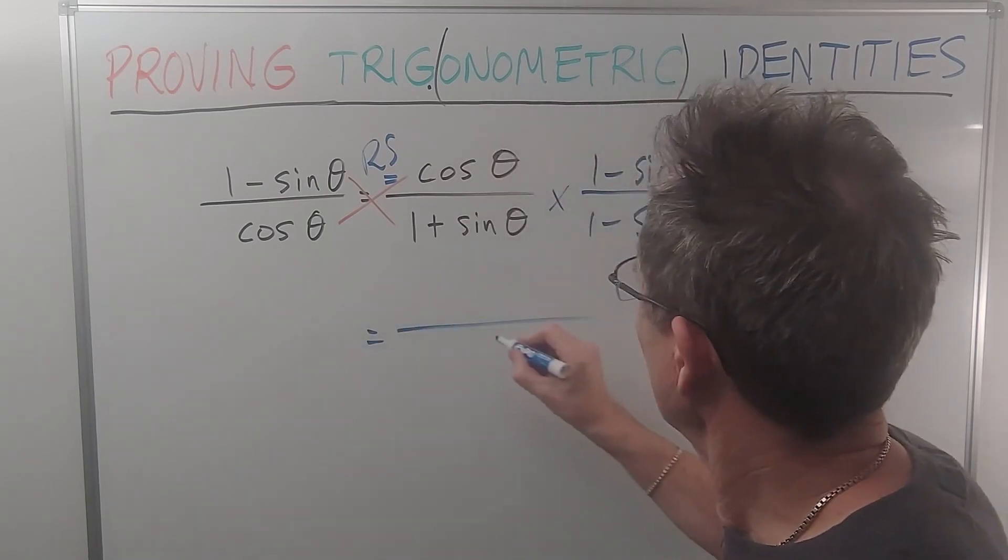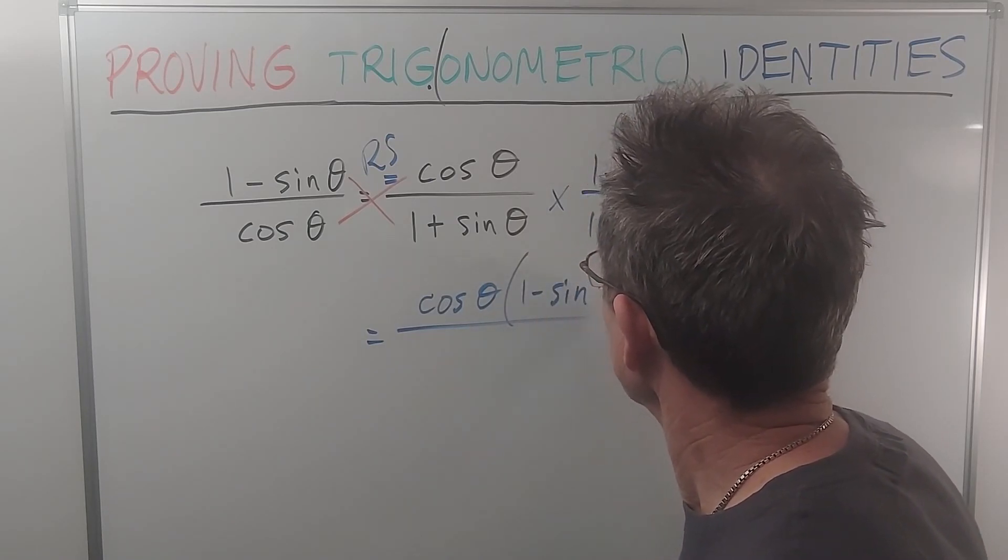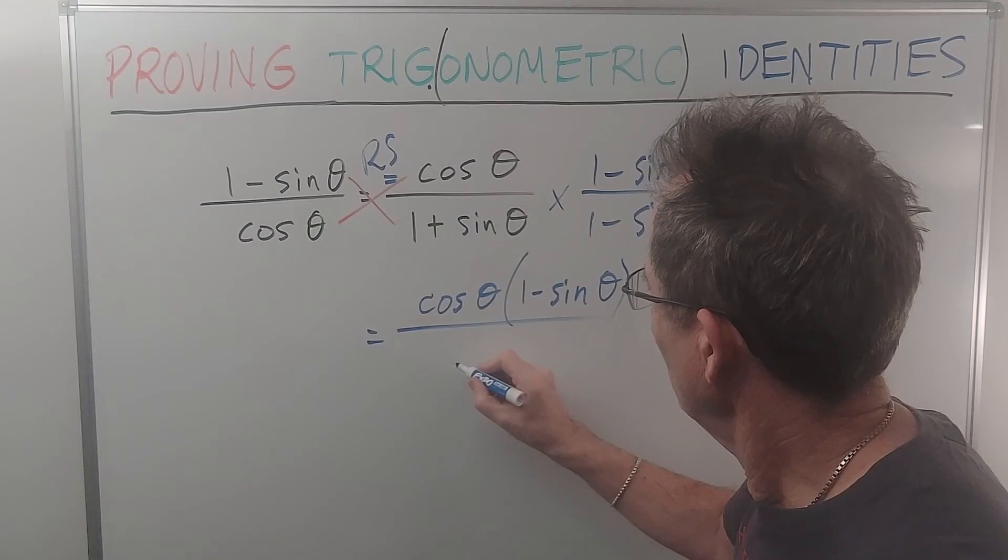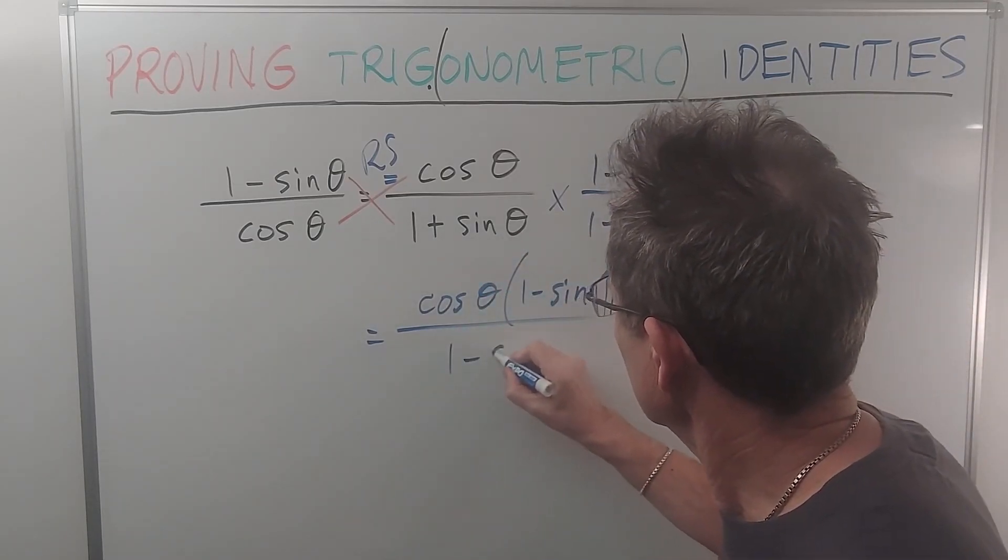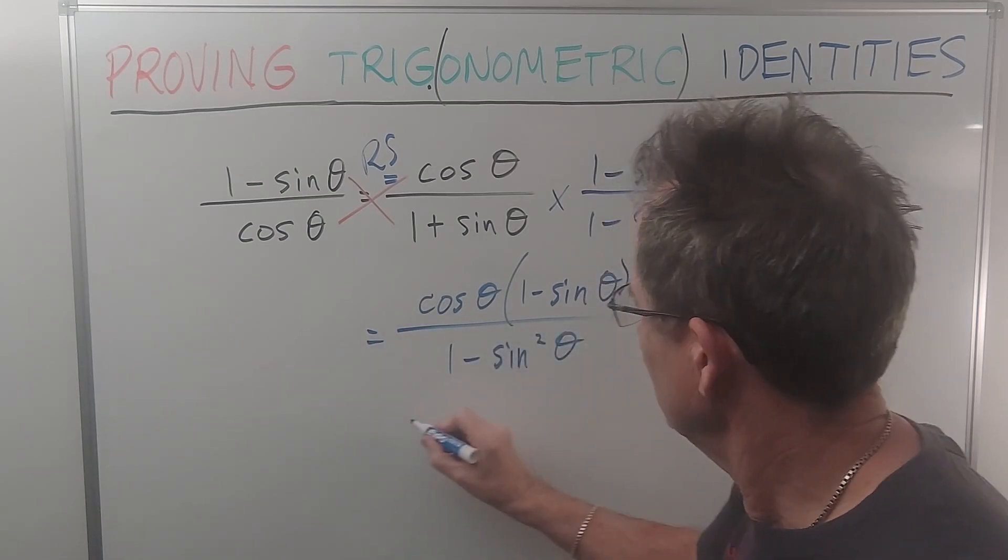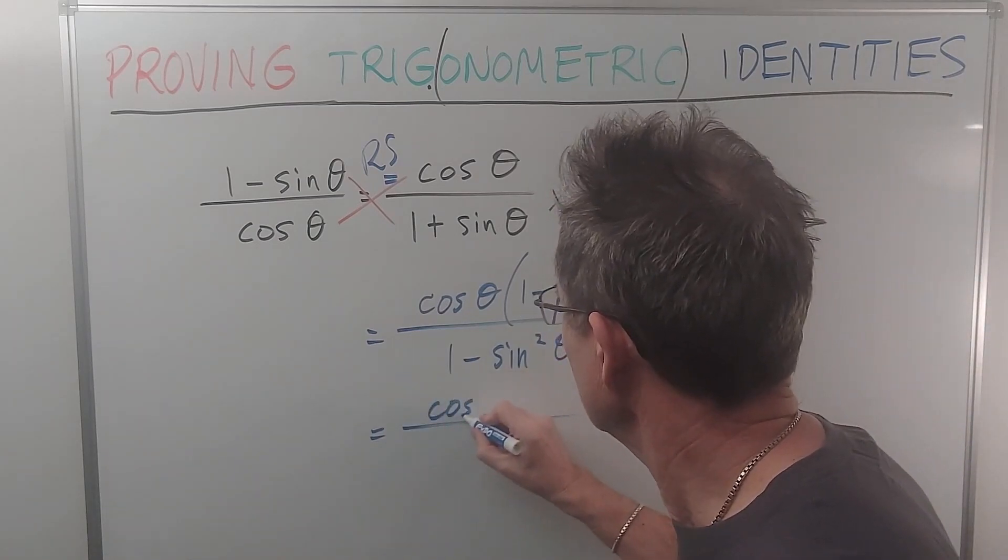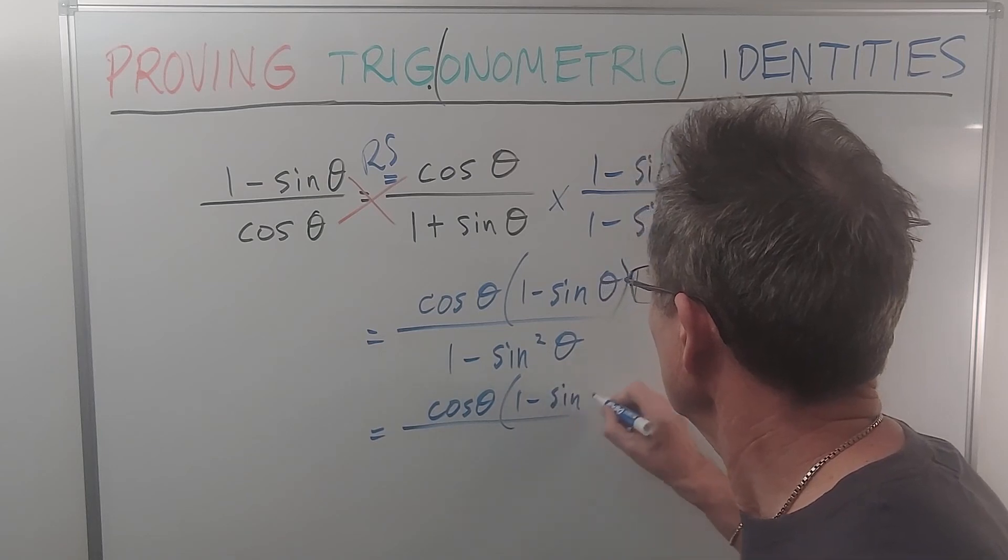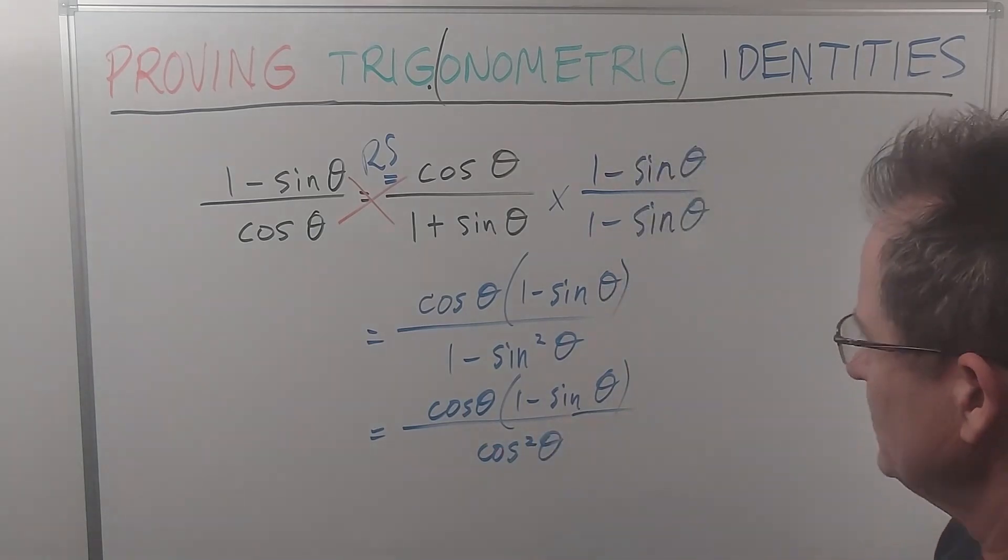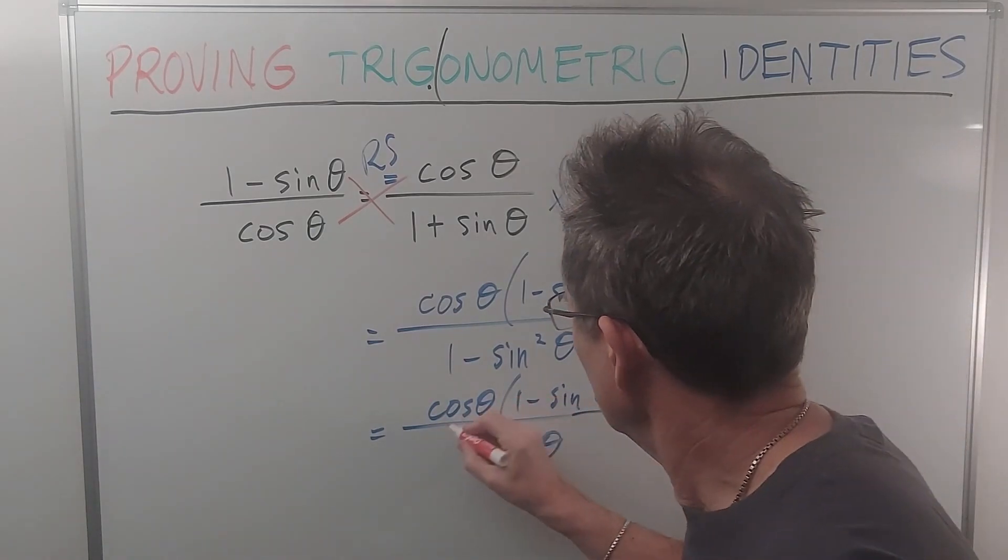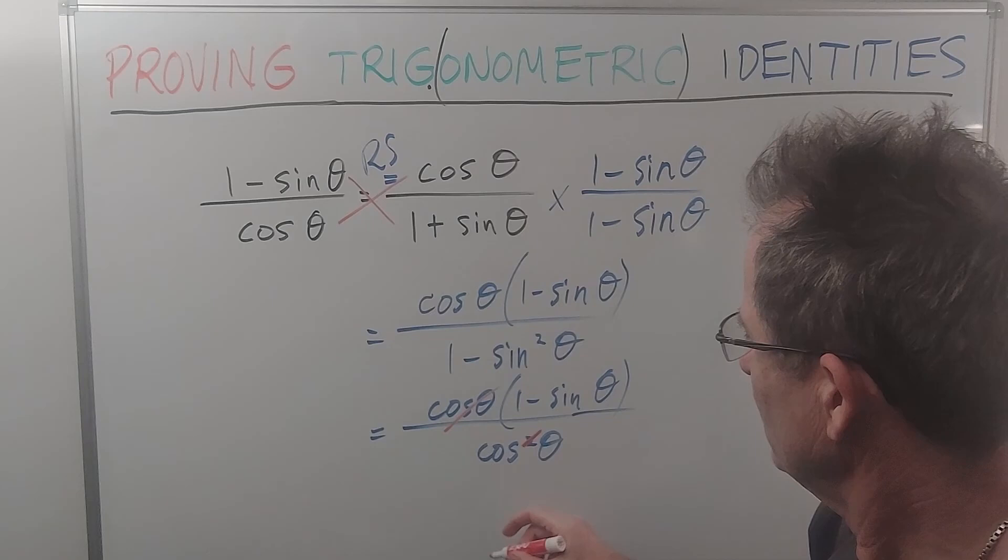If I multiply that out, I get cos theta times 1 minus sine theta. And now, of course, you notice that this cos theta cancels with one of those, leaving you with the left hand side, 1 minus sine theta over cos theta.